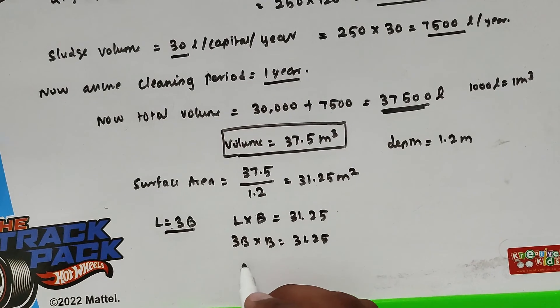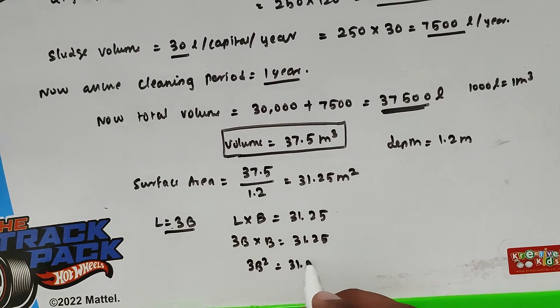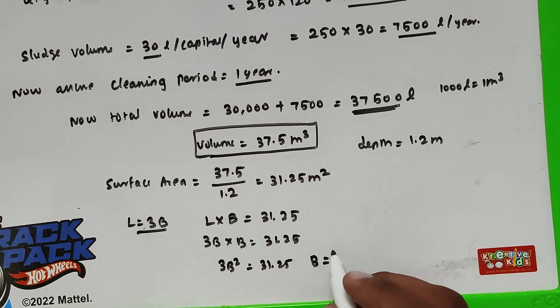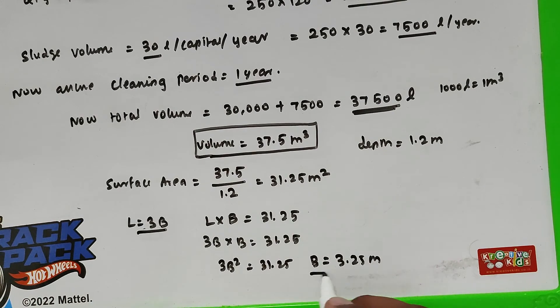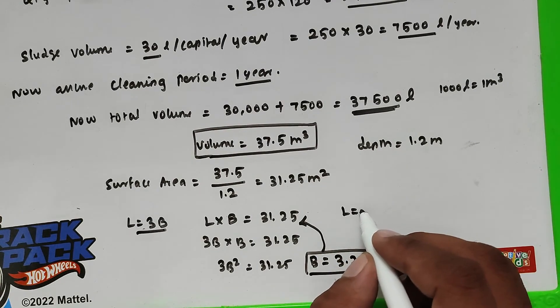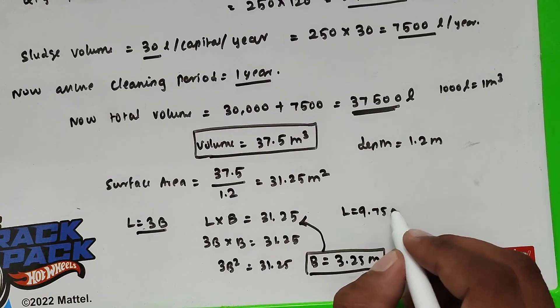So now 3B² equals 31.25. Solving this, we got the value B equals 3.25 meter. So we can substitute over here. So now the length will be 9.75 meter.